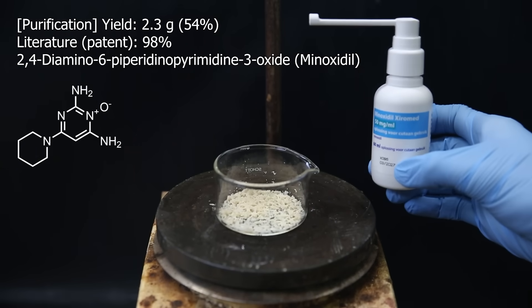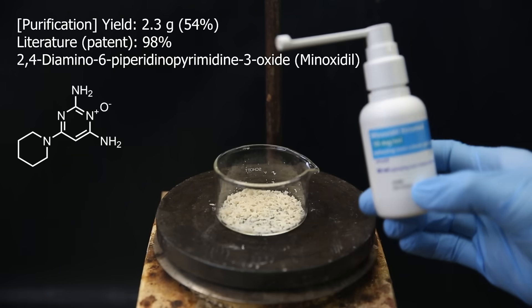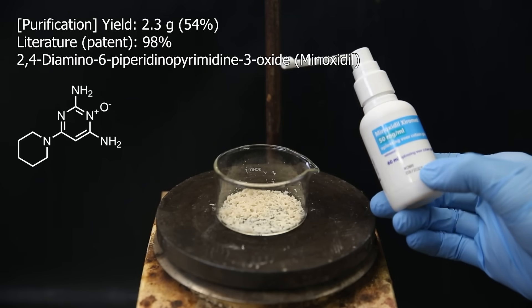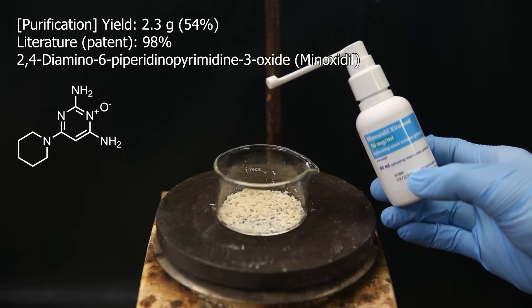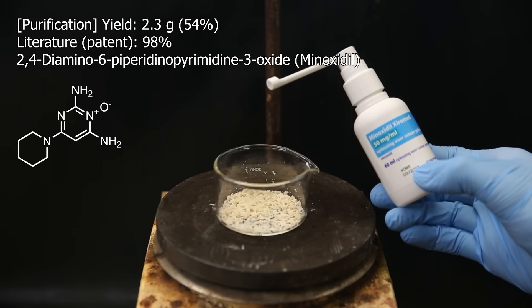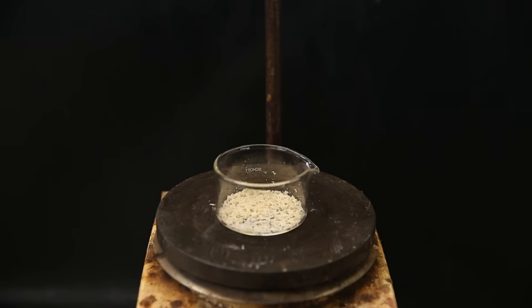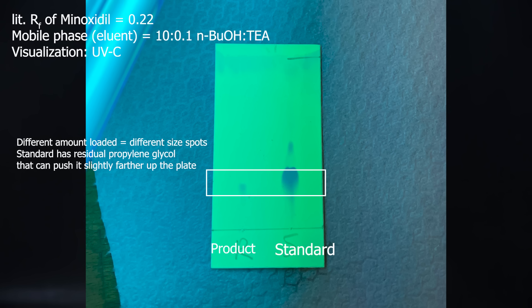Now to see if it is really minoxidil I can simply compare it to commercial minoxidil in topical hair growth sprays, which should just contain minoxidil together with the solvent ethanol and propylene glycol. To compare them I can just use thin layer chromatography, or TLC for short, which will separate components based on their polarity and show me if there is a compound with similar polarity in here, which must be minoxidil.